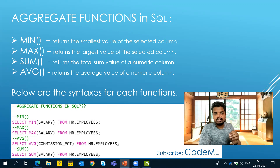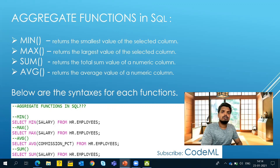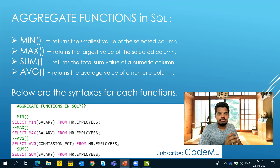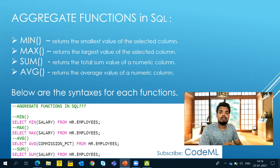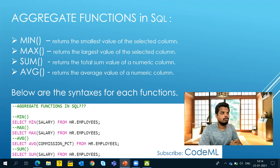Similarly, MAX will return the largest value. MIN and MAX work for different data types — both numeric data types and date values — so you can check what each returns for those column types as well.